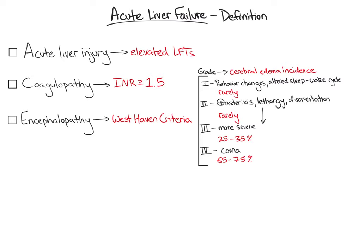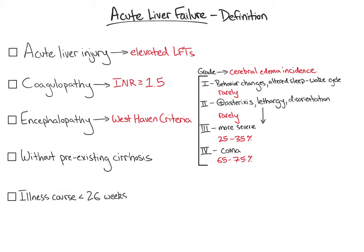In order to diagnose acute liver failure, all of these abnormalities must be occurring in a patient without pre-existing cirrhosis and with an illness course of less than 26 weeks' duration. Notable exceptions to the 26-week rule include Wilson disease, reactivation of hepatitis B virus, and autoimmune hepatitis.